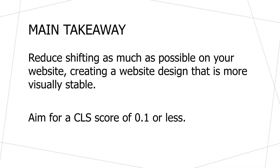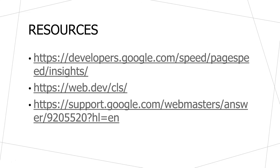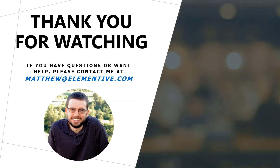The main takeaway is you want to reduce unexpected shifting as much as possible on your website and create a design that's more visually stable. On the CLS measurement, aim for a score of 0.1 or less. If you want more technical details about CLS or technical resources to share with your developers, resources from Google and web.dev are highly recommended. If you have any questions about CLS, Core Web Vitals, or other tech SEO subjects, please reach out. Thank you for watching.